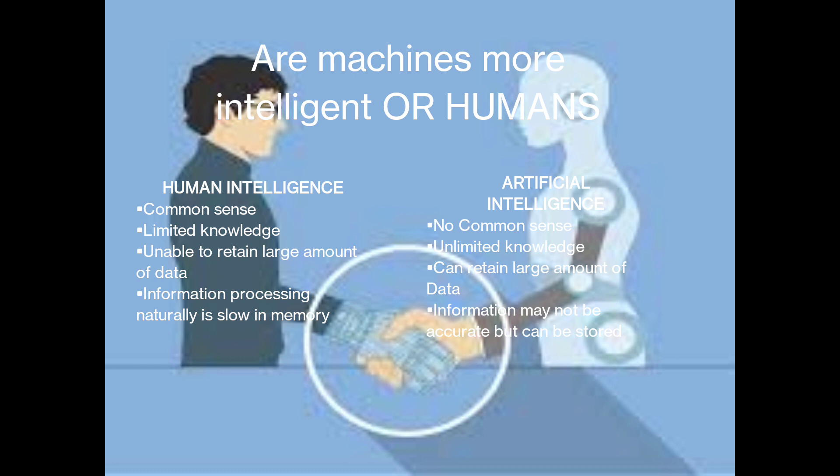Are machines more intelligent or humans are more intelligent? Human intelligence have common sense but artificial intelligence does not have it. Human intelligence have limited knowledge, limited memory but artificial intelligence have unlimited knowledge and unlimited memory. Human intelligence does not retain large amount of data but artificial intelligence can retain large amount of data. In human intelligence, information processing is naturally slow in memory but in artificial intelligence, information processing is fast in memory but it may not be accurate what it can do to retrieve it.